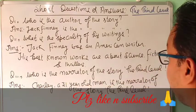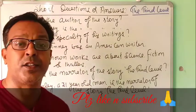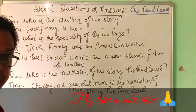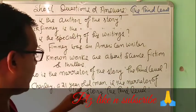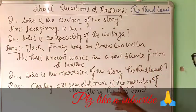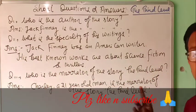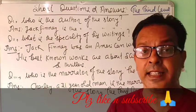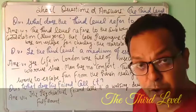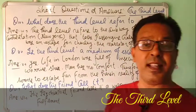Question Number Three: who is the narrator of the story 'The Third Level'? आखिर इस कहानी का सूत्रधार कौन है? So, Charlie, a 31-year-old man, is the narrator of the story 'The Third Level.' उसका नाम Charlie है।